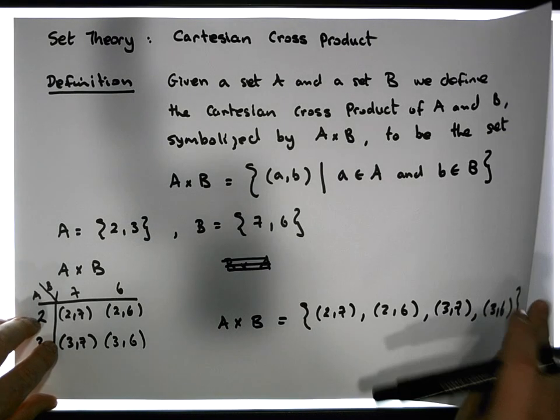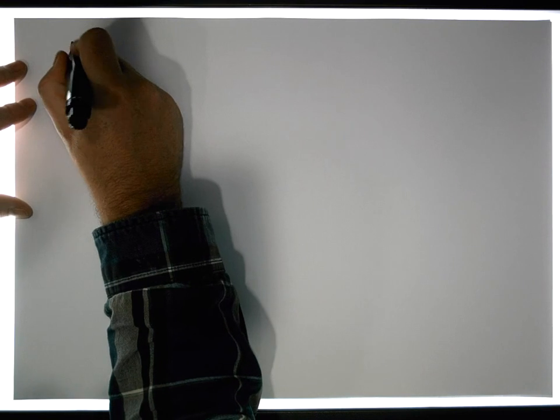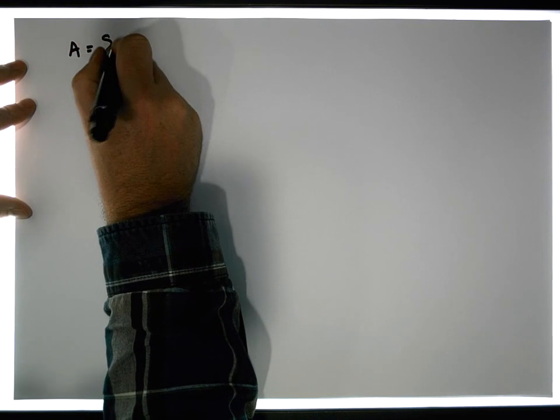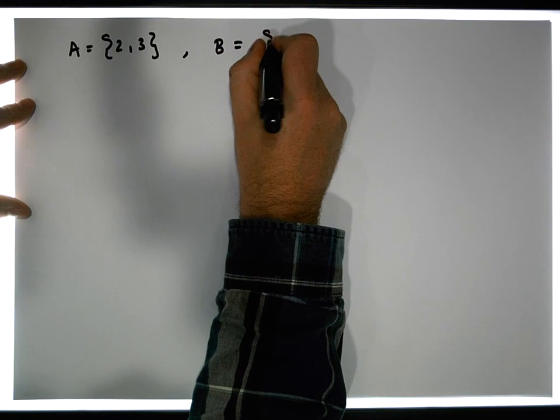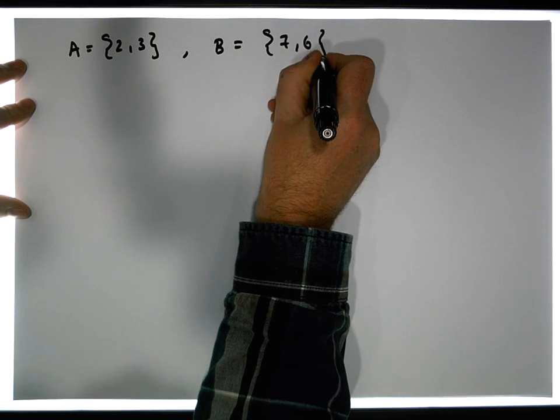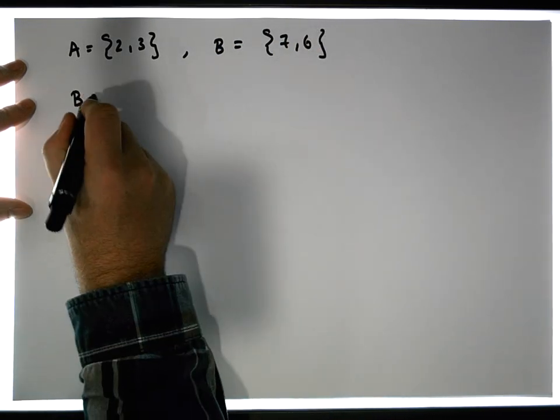Let's do it again. Let's stick with those two sets. So we have A is the set that contains 2, 3, and we have B is the set that contains 7, 6. And this time what I'd like to construct is B×A.